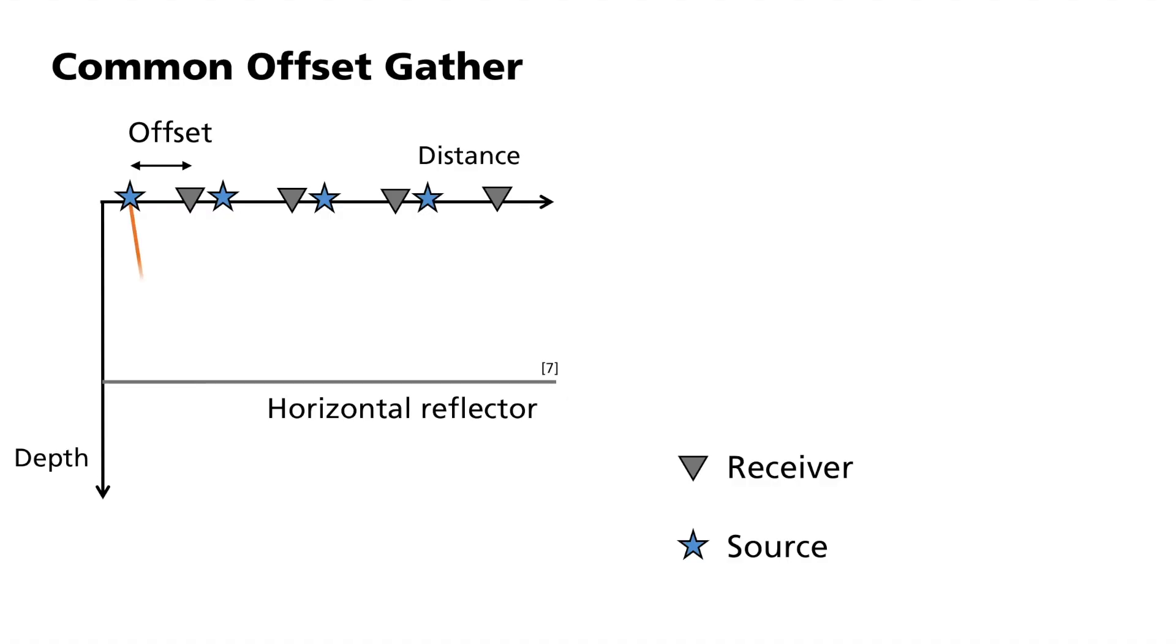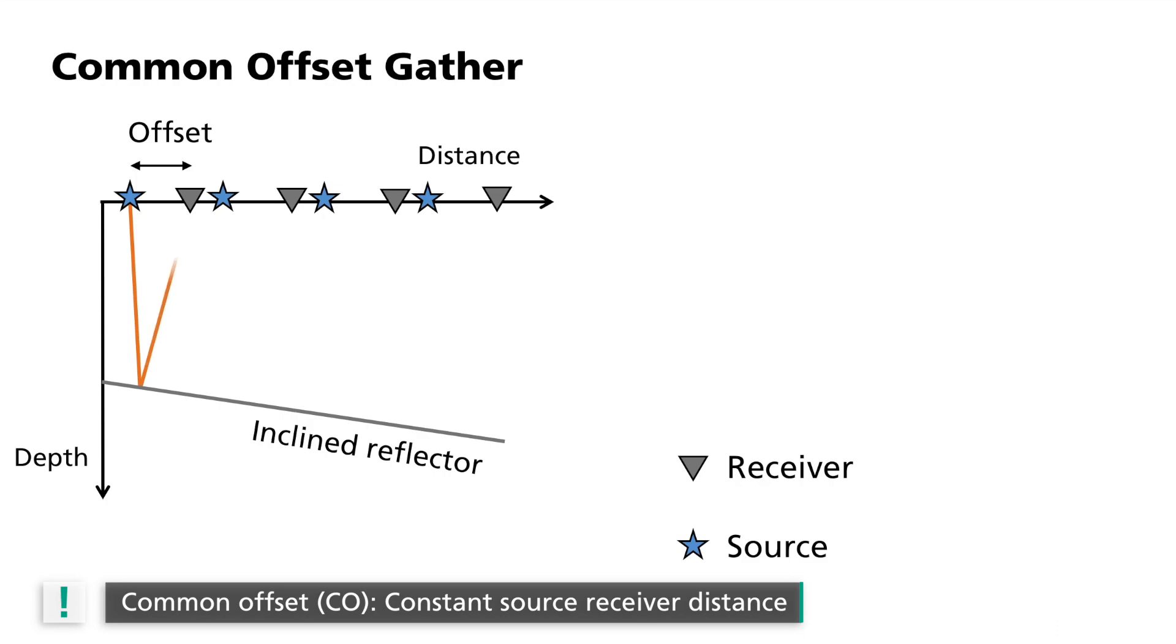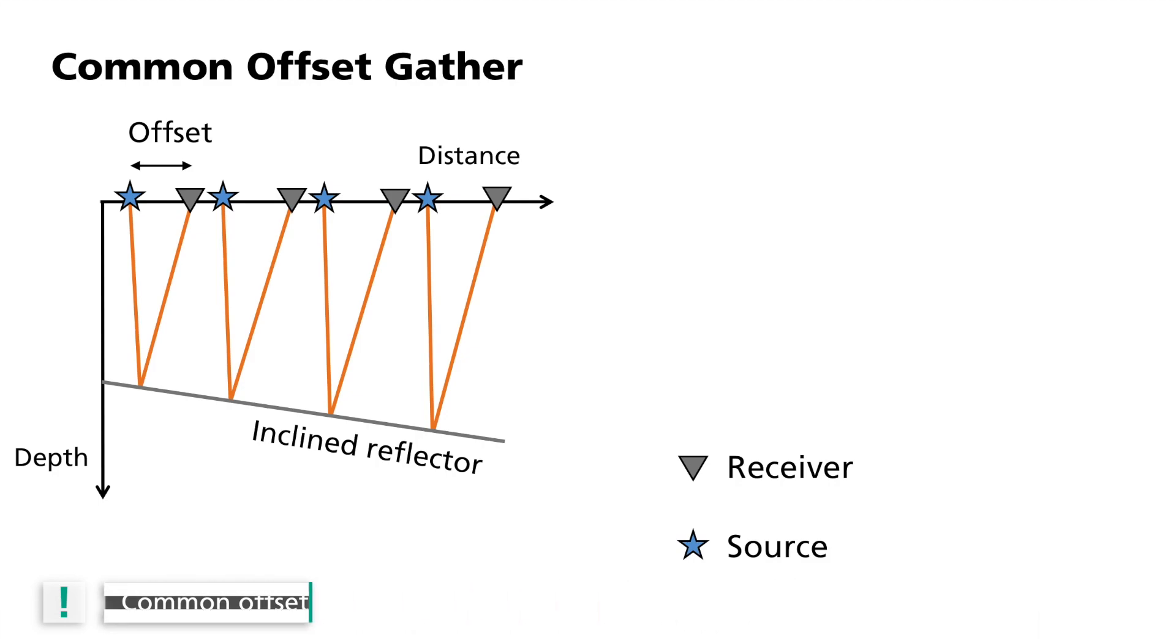This source receiver distance is called offset, and the corresponding gather with a common distance is referred to as common offset. An inclined reflector under a constant common offset geometry produces a larger travel time as the depth of the reflector increases.